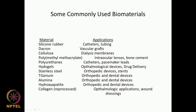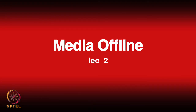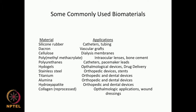This slide gives a brief overview of the type of materials used for different applications. Metals come into the picture, as do non-metals like inorganic materials, polymers, and biomaterials. There is always an overlap of applications of these materials in different areas of biomaterial design.